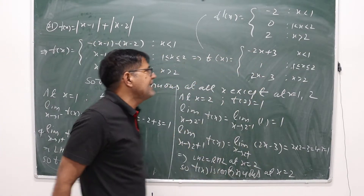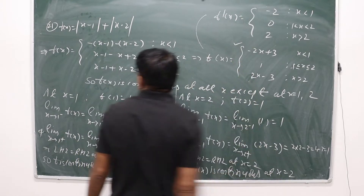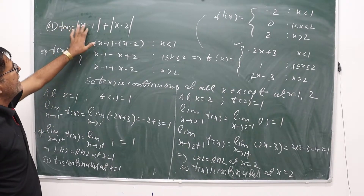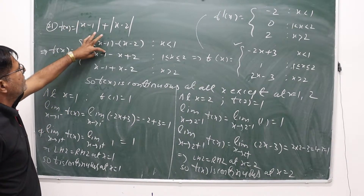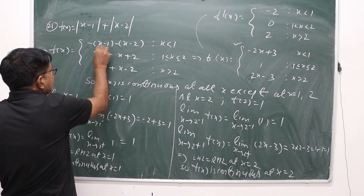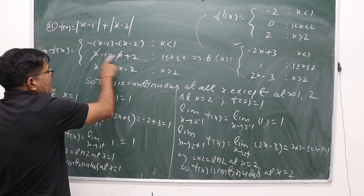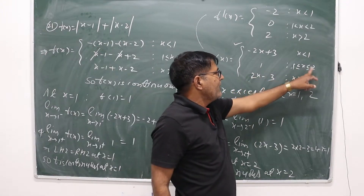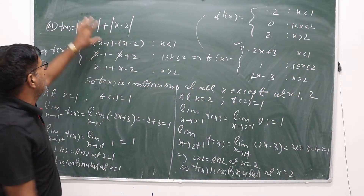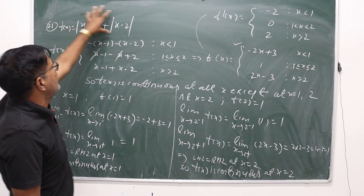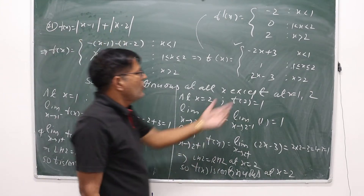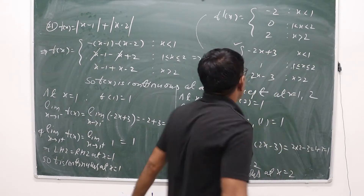When 1 < x < 2, (x-1) is positive and (x-2) is negative, so f(x) = (x-1) - (x-2) = 1. When x > 2, both terms are positive, so f(x) = (x-1) + (x-2) = 2x - 3. So the piecewise definition is: f(x) = -2x + 3 for x < 1; f(x) = 1 for 1 ≤ x ≤ 2; f(x) = 2x - 3 for x > 2.